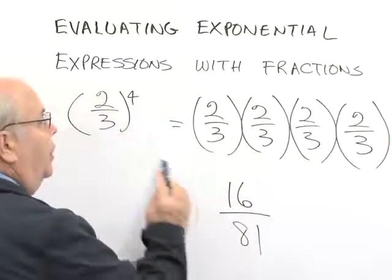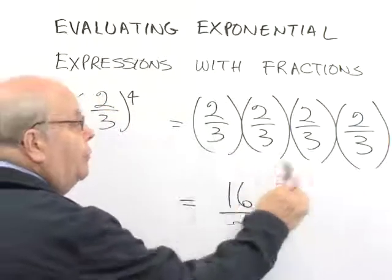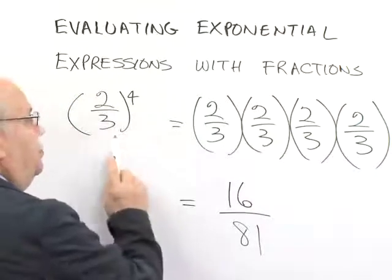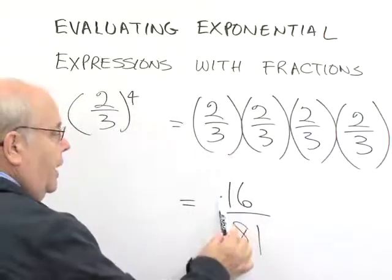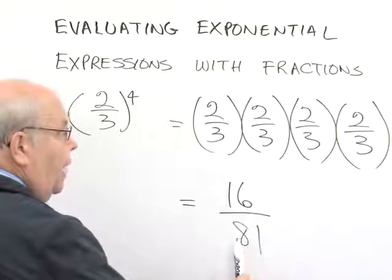It's very important that we show this step of the different fractions that we have to multiply. So, two-thirds to the fourth power equals sixteen over eighty-one.